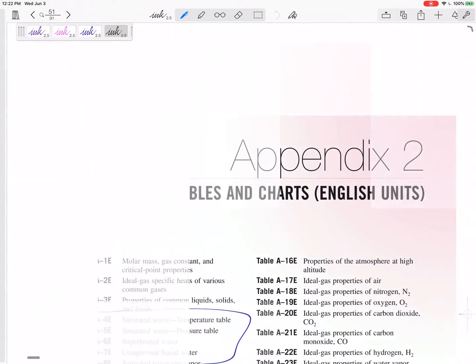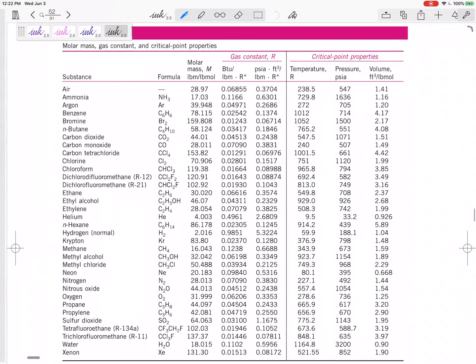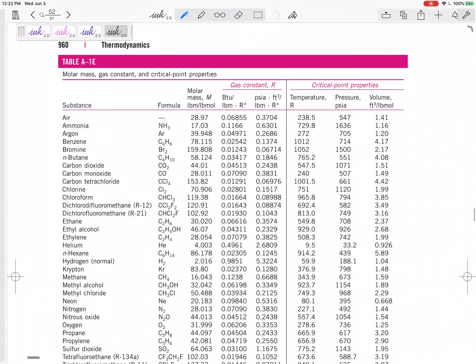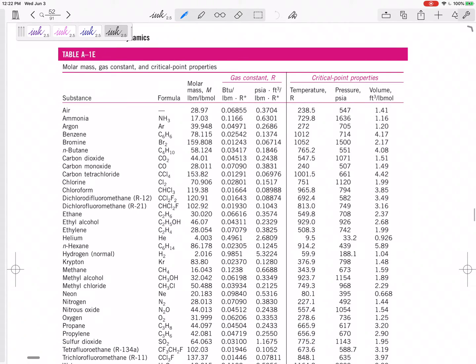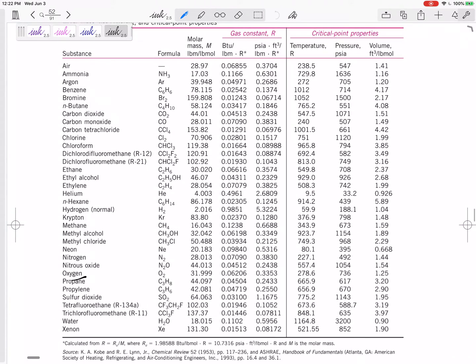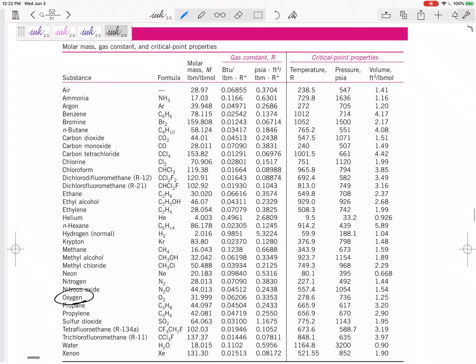So we go here to table, to Appendix 2, 1E, table A1E. And so we've got oxygen. There we go. And so we need the gas constant R. So either that one or that one, depending on the units that we want.